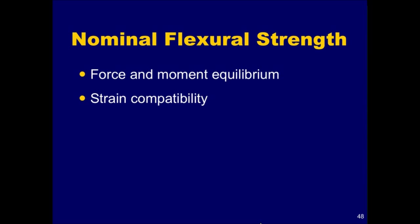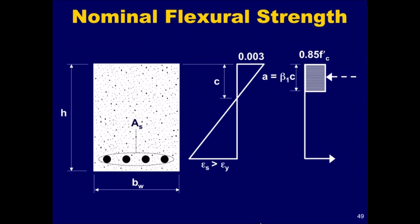We are now ready to determine the nominal flexural strength of a reinforced concrete member or cross section. The nominal flexural strength must be based on equilibrium and strain compatibility using the design assumptions that were just discussed. Let's apply these principles to the strain and force diagrams derived under the design assumptions, assuming that the reinforcement yields before the concrete crushes.